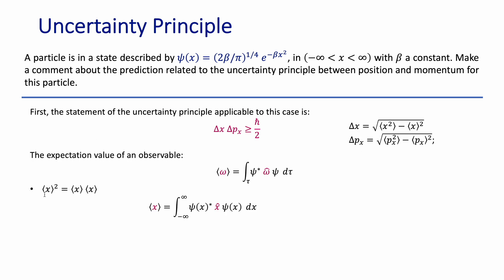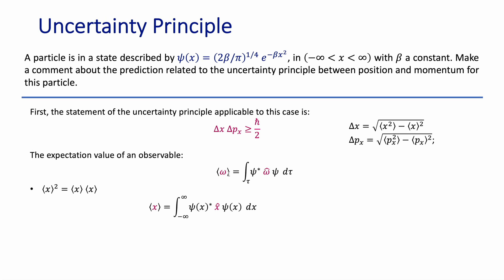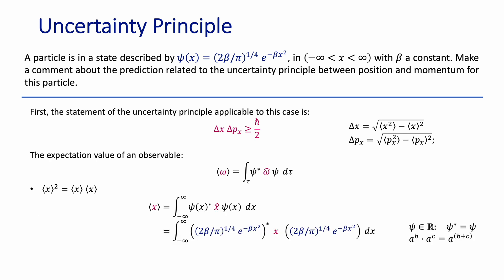Let's do the first one: calculating the square of the expectation value of the position — that is, the expectation value times the expectation value. We only need to calculate the expectation value of the position once, then multiply that value by itself to get the square. The observable is the position, so the operator is the position operator, and we substitute in the explicit form of the wave functions — wave function star (the complex conjugate) times the wave function.